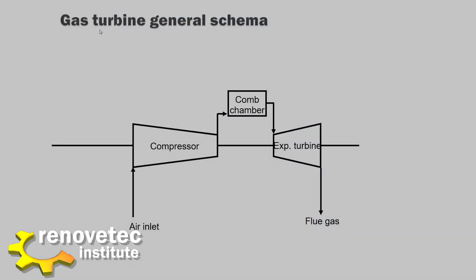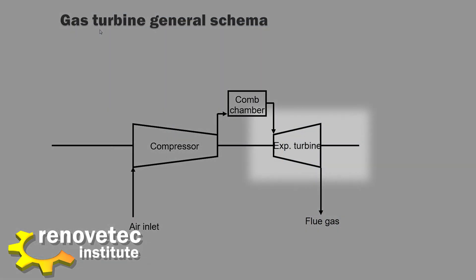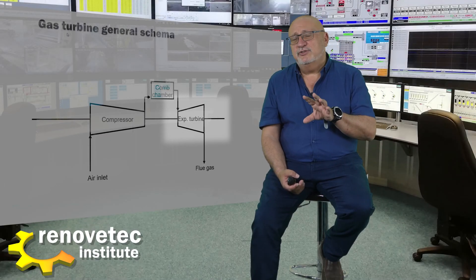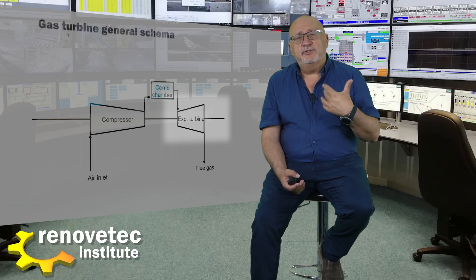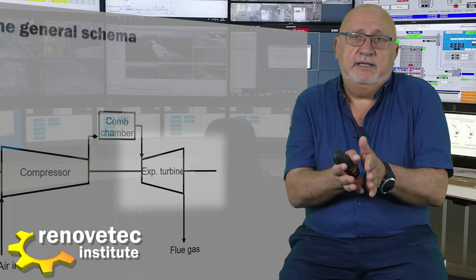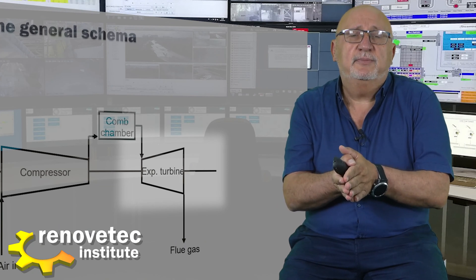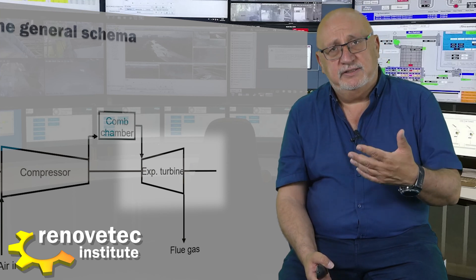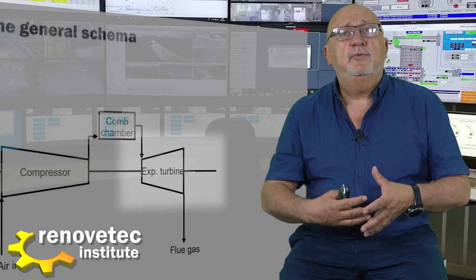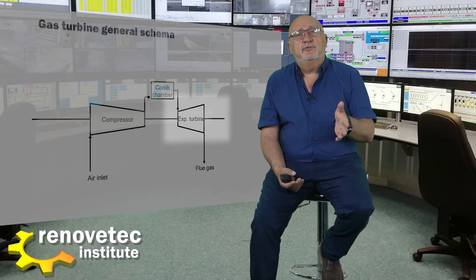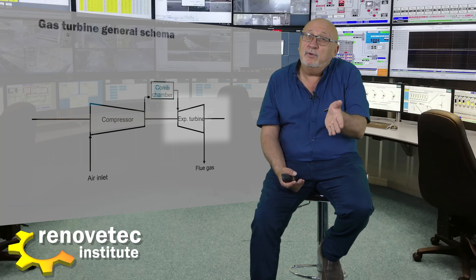The third element is the expansion turbine. Remember that in the compressor we increase the pressure, in the combustion chamber we increase the temperature of the air, and now at the outlet of the combustion chamber we have air that is both heated and pressurized. In the expansion turbine, we release this pressure. The most normal inlet temperature is around 1200, 1300, or even 1400 degrees.